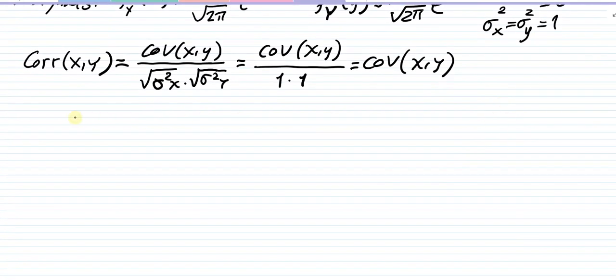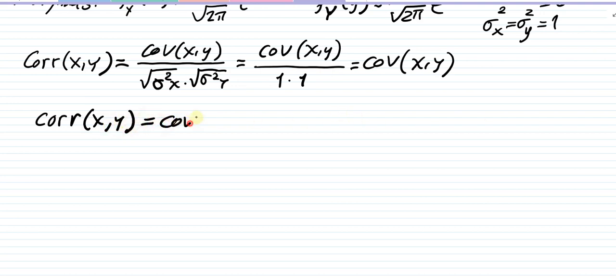Since these are standard normal distributions, the standard deviations and hence the variances are one. So in the case of the bivariate standard normal distribution, the correlation and covariance turn out to be the same. If you find one, you've found the other.